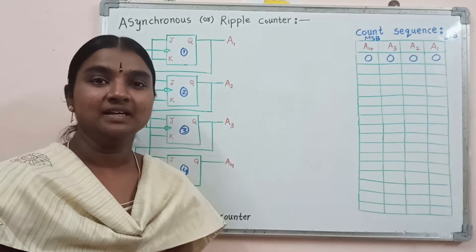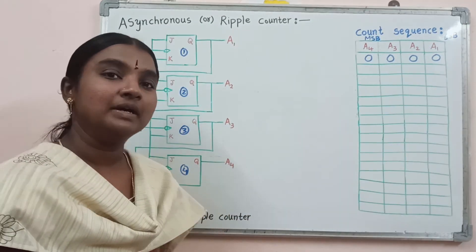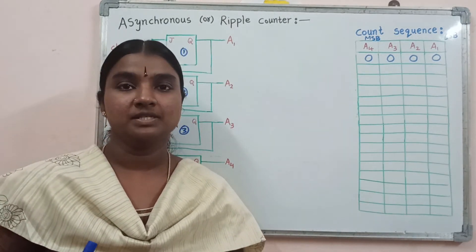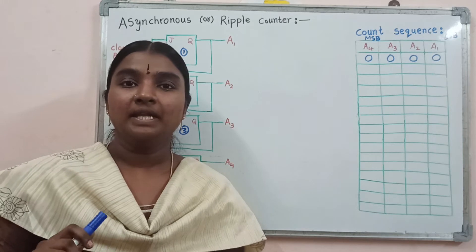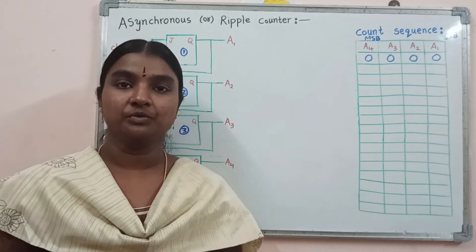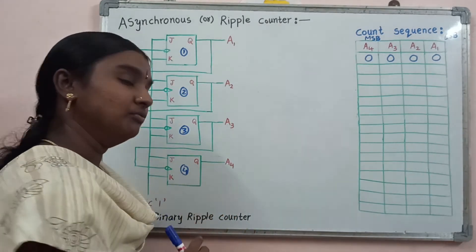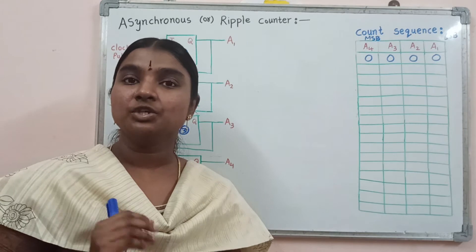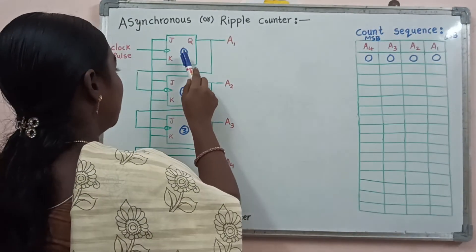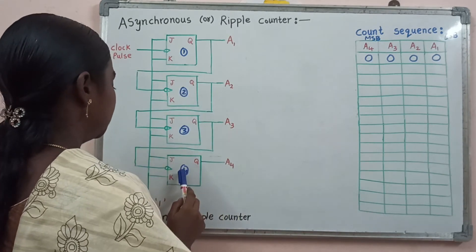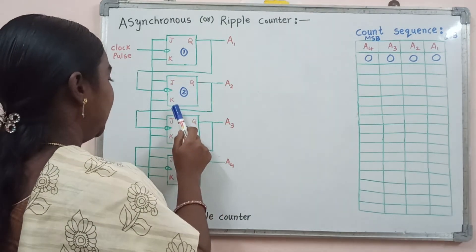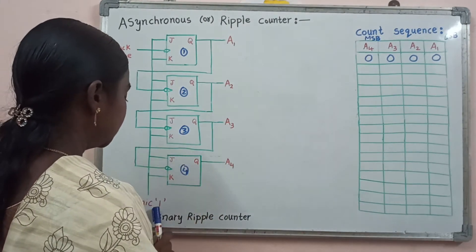We will now see the circuit operation of this 4-bit binary ripple counter. In any ripple counter circuit, the number of binary bits we are handling decides the number of flip-flops to be used. In this circuit, it consists of 4 binary bits, so we use 4 flip-flops. Here I am using 4 JK flip-flops. In this circuit diagram, all the flip-flops' JK inputs are at logic 1.